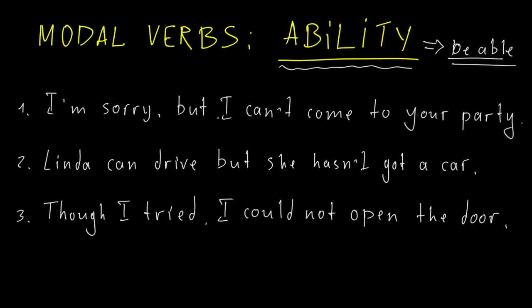I'm sorry, but I can't come to your party. So here we talk about something in the future, but we talk about it in the present. So here we have present to future. Now we talk about something that cannot or is impossible to happen in the future. And here I have this ability.